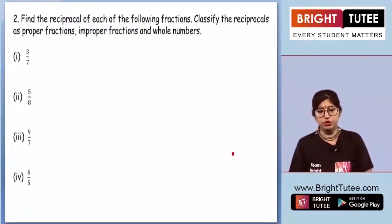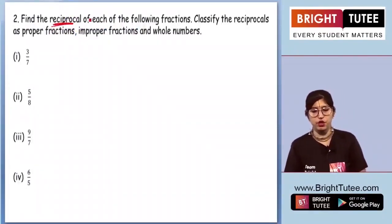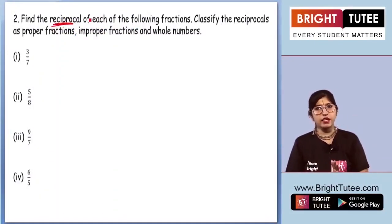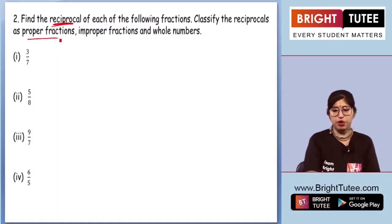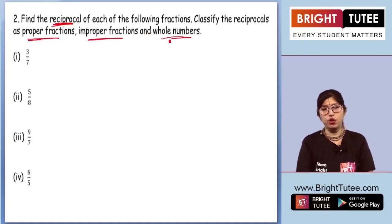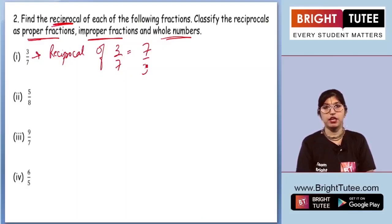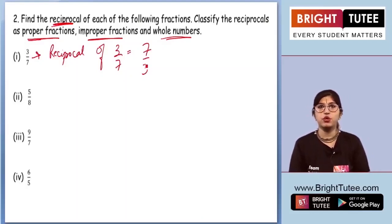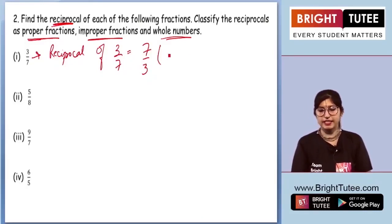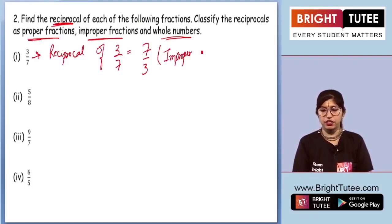Moving on to question 2: we need to find the reciprocal of each of the following fractions and then classify each as a proper fraction, improper fraction, or whole number. Starting with the first part — the reciprocal of 3 by 7 is 7 by 3. Since the numerator is greater than the denominator, that will be an improper fraction.